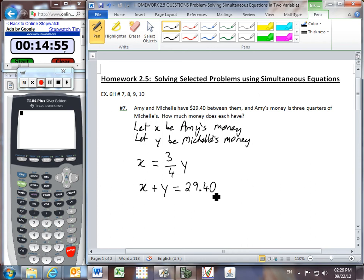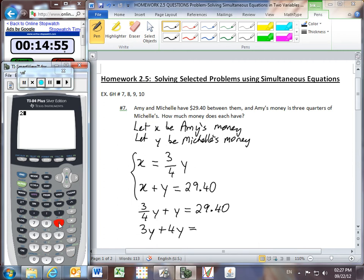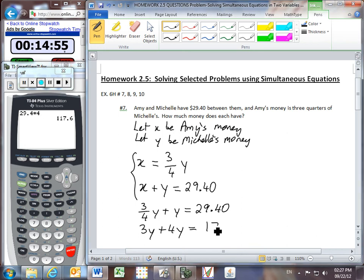Looking at this system of equations, it's already set up beautifully to use substitution as an approach, because X has been isolated within the first equation. So let's replace the X with three quarters Y. Now I know that you guys aren't crazy about fractions, so why don't we multiply through by four here to clear the fractions. But I must multiply every term by four, including the 29.40.